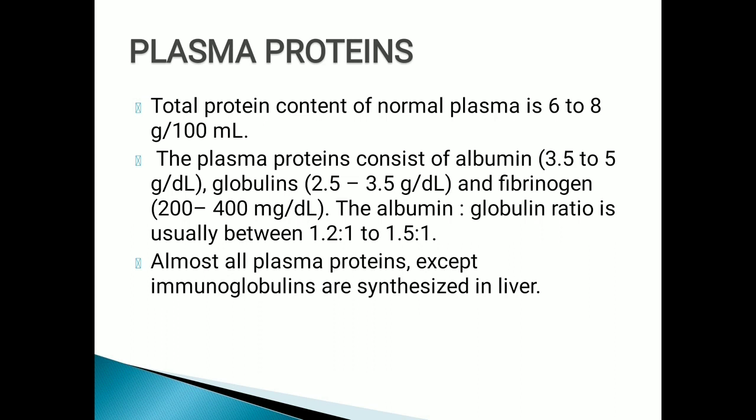The five bands are albumin, alpha-1, alpha-2, beta, and gamma globulin. Total protein content in plasma is 6 to 8 gram per deciliter, in which albumin is 3.5 to 5 gram per deciliter, globulin is 2.5 to 3.5 gram per deciliter, and their ratio is 1.2:1 to 1.5:1. Almost all plasma proteins except immunoglobulins are synthesized in the liver, and almost all are glycoproteins.